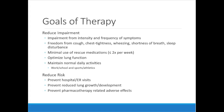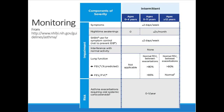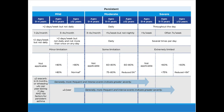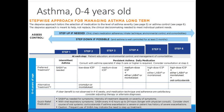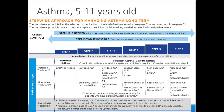A patient with asthma should be able to live a very regular life as long as they're being managed appropriately and taking their medications correctly. Monitoring looks at symptoms, nighttime awakenings, and interference with normal activity. Classification is stratified into intermittent and persistent asthma at several tiers depending on symptom frequency.